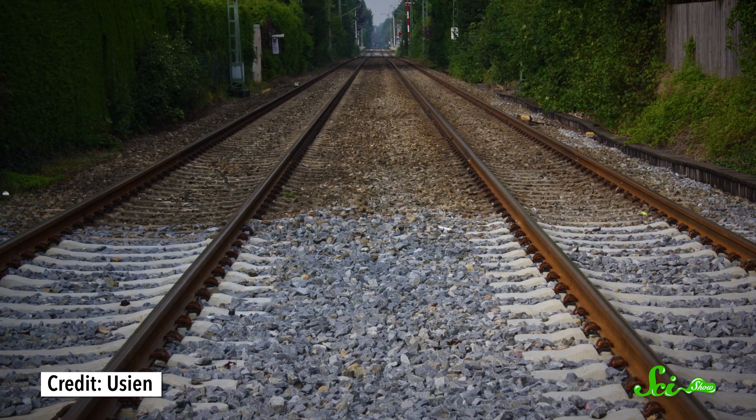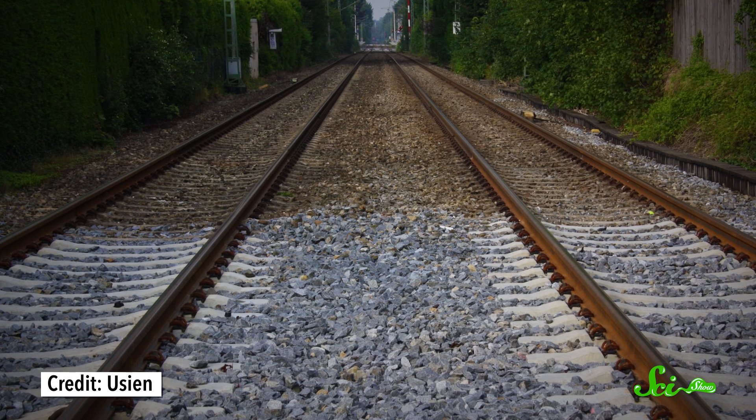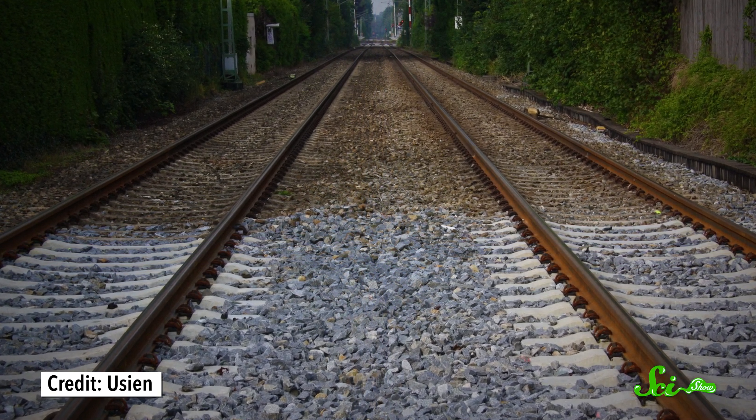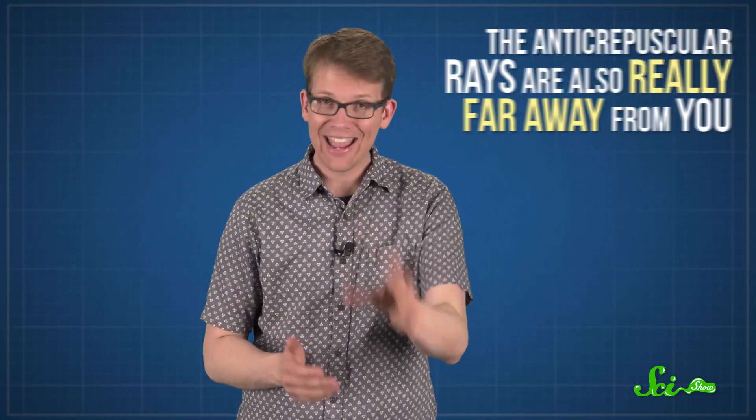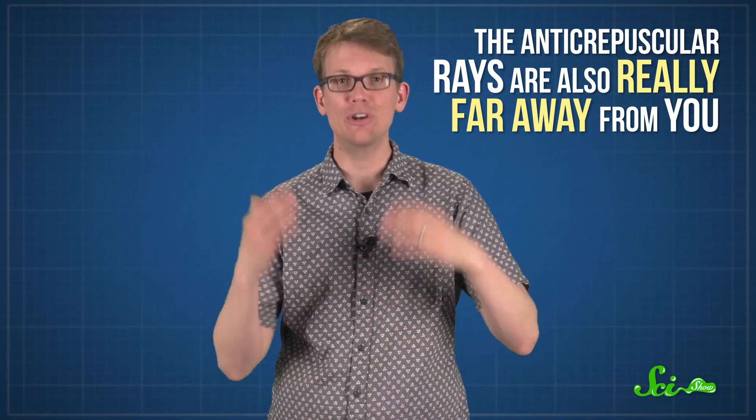Just like how train tracks look parallel when you're standing next to them, but they look like they're getting closer together the farther away they are from you. So those beginnings of crepuscular rays far away from you are like those distant train tracks that seem like there's hardly any space between them. Then the rays directly above you are like the train tracks by your feet, so they look parallel. But the anti-crepuscular rays are also really far away from you. They're just as far away as the original ones. So they look like they're coming together just like the original crepuscular rays did.